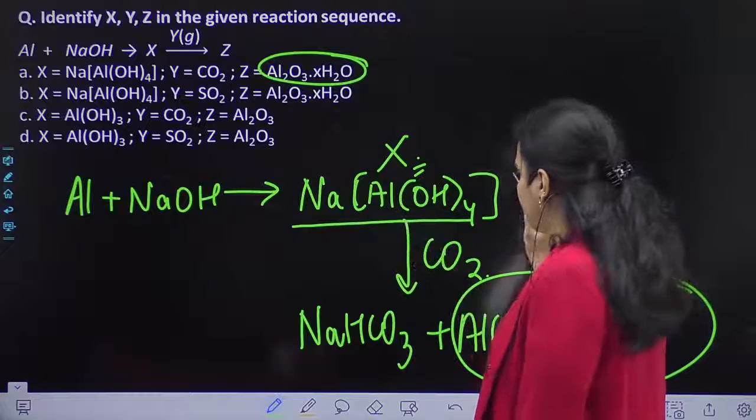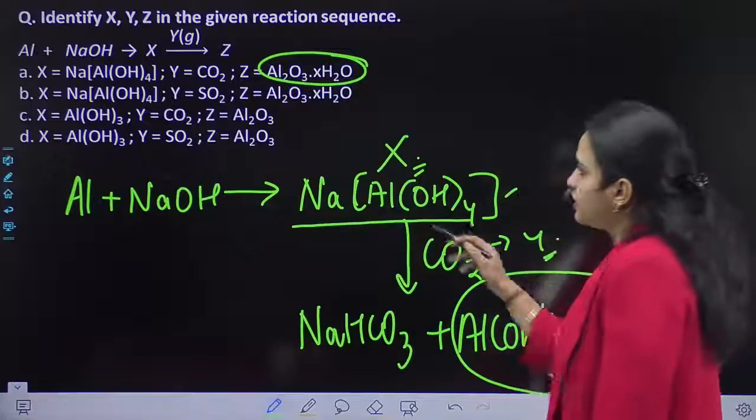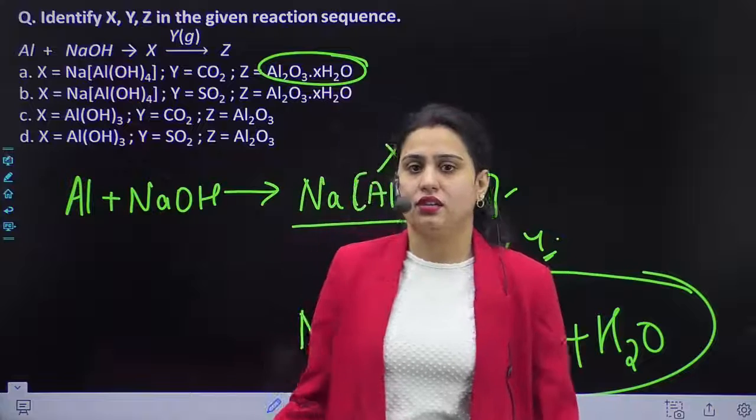So this is your X, this is your Y, CO2 is Y and Z is Al2O3.XH2O. Therefore A is the answer. Thank you.